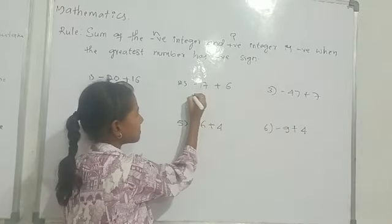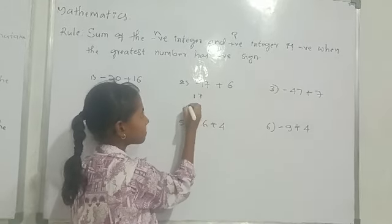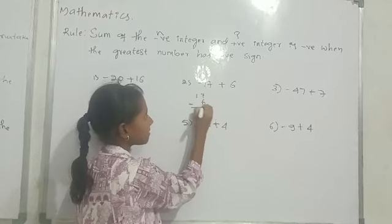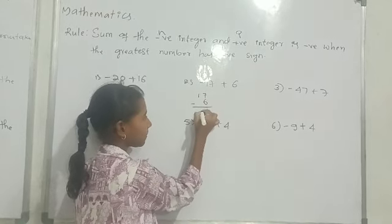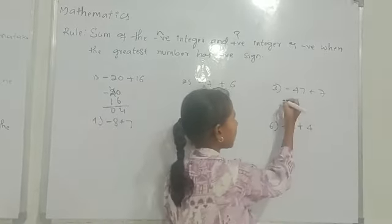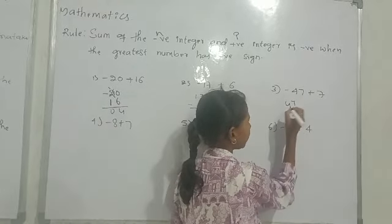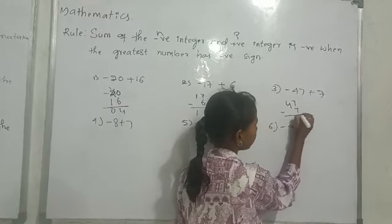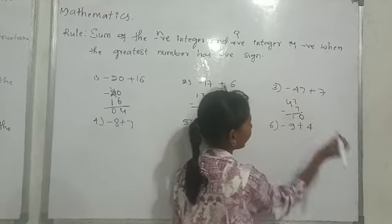Second example: 17 minus 6 equals 11. Third example: 47 minus 7: 0, 1, 10, 9.